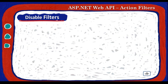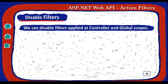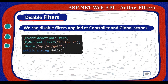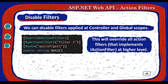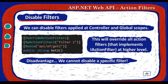The final part is disabling filters. We can disable filters applied at the controller and global levels by adding the attribute OverrideActionFilters to the action method. The filter on the action method itself, MyActionFilter2, is not disabled — we just disable the filters from the controller and global levels. This will override all action filters that implement iActionFilter at a higher level, at controller or global level. The disadvantage is that we cannot disable a specific filter, because we disable all iActionFilter implementations at higher levels.